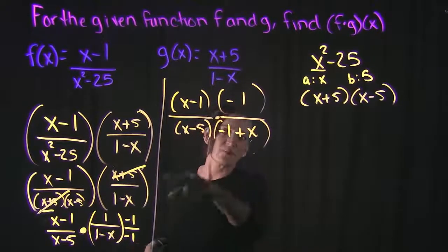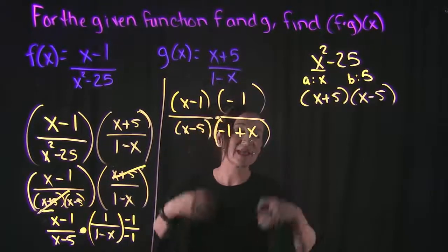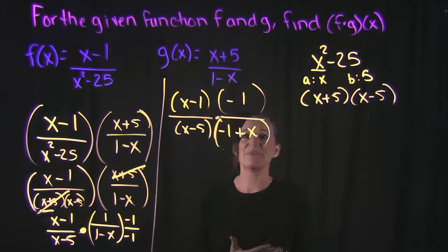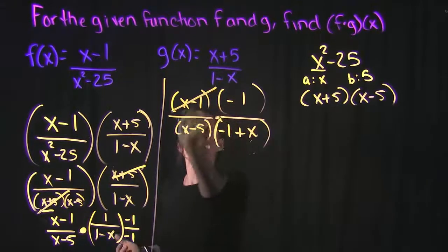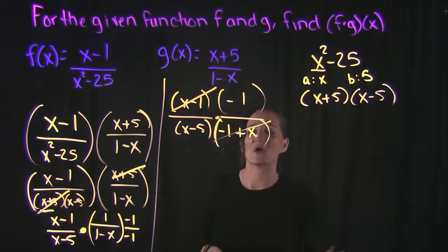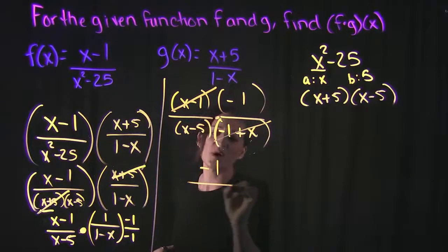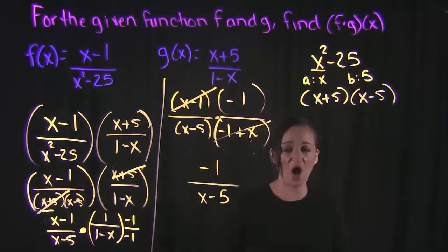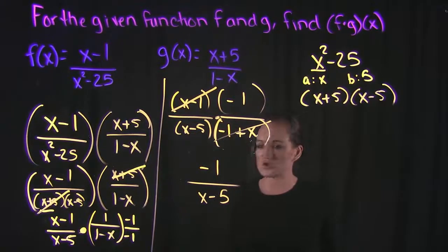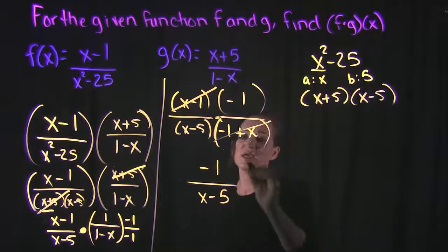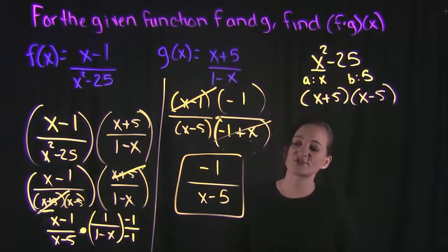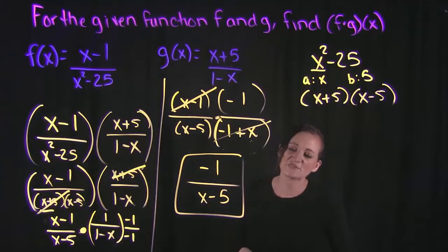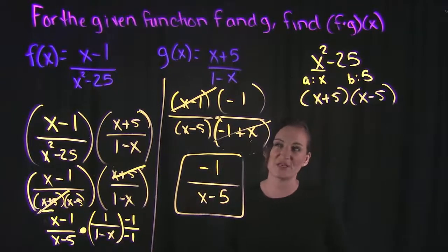But, what's important is they are now the same thing. All we had to do was multiply by a negative, and now we can cancel these two out. Leaving us with a negative 1 in our numerator and an x minus 5 in our denominator. It doesn't look like there's anything else that we can do here. So, this is our final answer here. We get a negative 1 over x minus 5 after multiplying these two functions together.